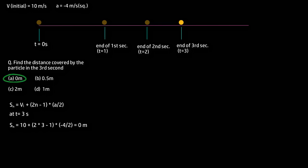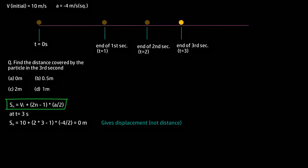Option A seems to be the right answer, but you need to pause and think — the answer is actually incorrect. Option A is the wrong option. The reason it is wrong is that this equation gives the displacement of the particle in the nth second, not the distance covered. We have been asked for the distance covered in the 3rd second, and displacement and distance are two different physical quantities: displacement is a vector quantity and distance is a scalar quantity.